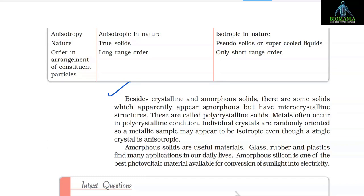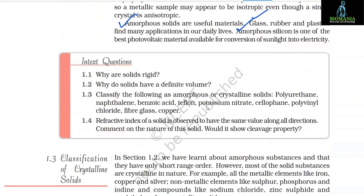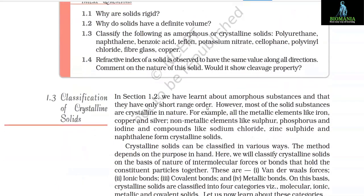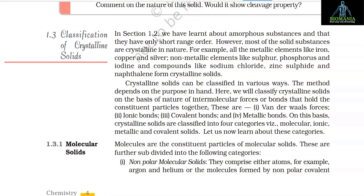Besides crystalline and amorphous solids, there are some solids which apparently appear amorphous but have microcrystalline structures — these are called polycrystalline solids. Metals often occur in polycrystalline condition; individual crystals are randomly oriented, so a metallic sample may appear isotropic even though a single crystal is anisotropic. Amorphous silicon is one of the best photovoltaic materials available for conversion of sunlight into electricity.